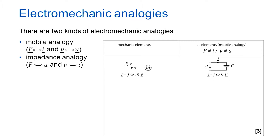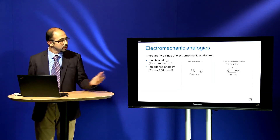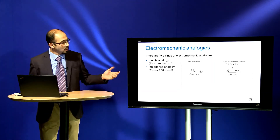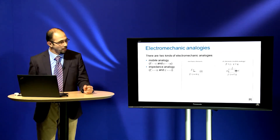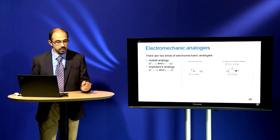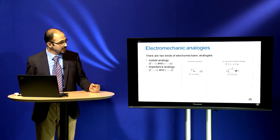If we apply a force to a solid body with mass, the mass will accelerate. According to Newton's second law, we know that force is equal to mass multiplied by the acceleration. And if we describe it in complex form, we can use the velocity and the angular velocity omega — 2π times the frequency — and then we can define the mechanical impedance.